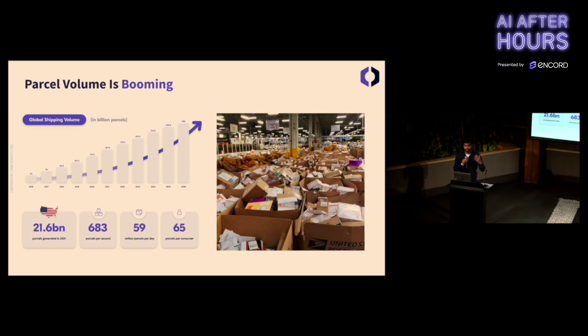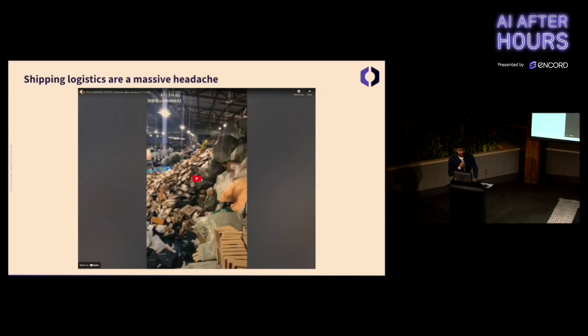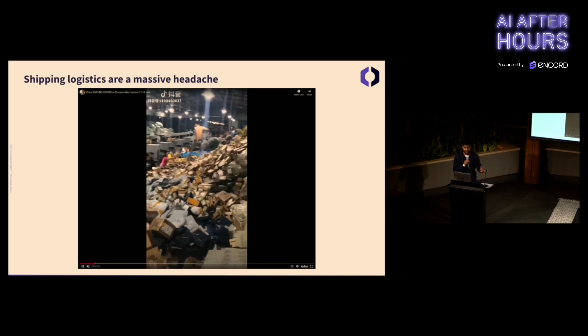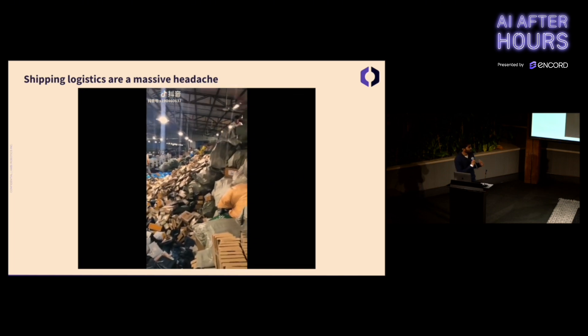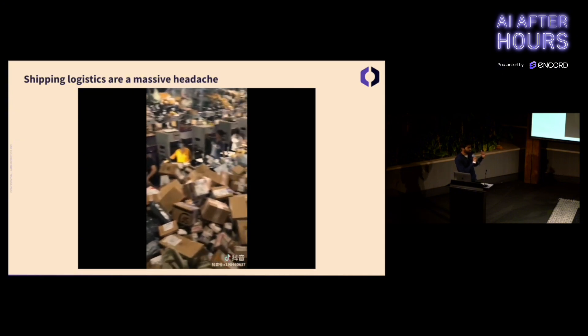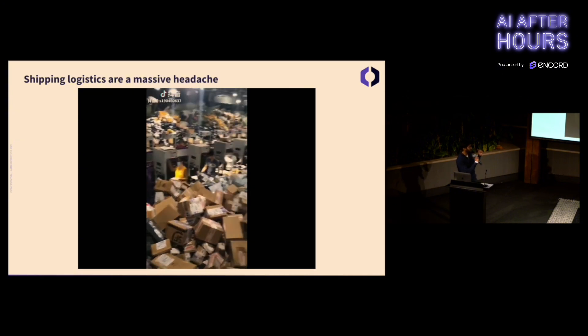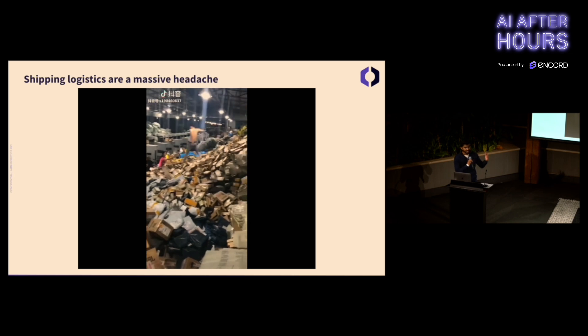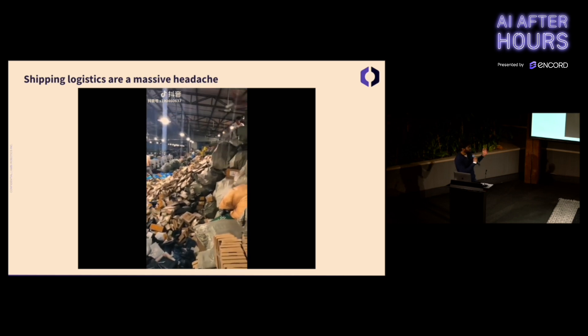An example is last mile sortation to the final mail routes to your house. Shipping logistics are a massive headache. Here's some video footage from inside a warehouse, admittedly in China, but a similar thing is happening in the U.S. As you can see, it's very chaotic and also looks very unsafe.